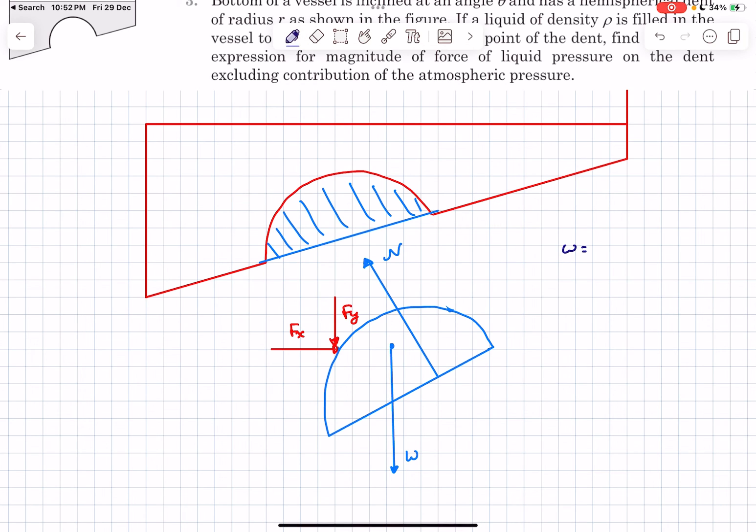Now let's try to determine each of these terms. W is very easy; it equals the volume of the hemisphere, that will be 2/3 π r³, times the density of the fluid multiplied by g. So W is done. For determining N, we can use the result we discussed. N is the resultant force that the fluid applies on this circular surface. According to our result, it was simply the pressure at the centroid multiplied by the area of the surface.